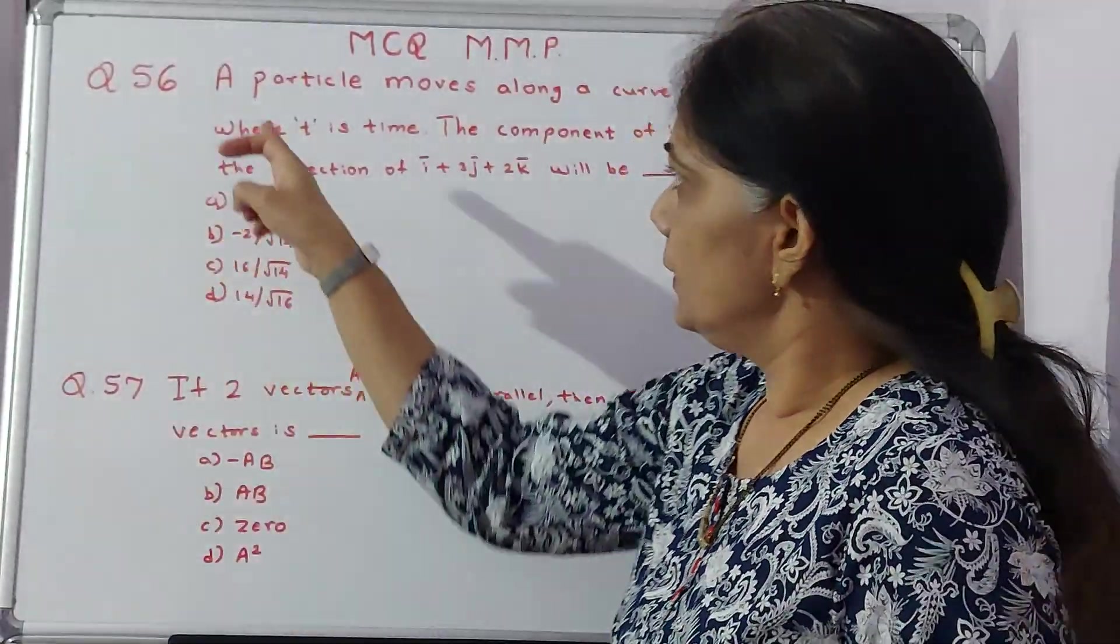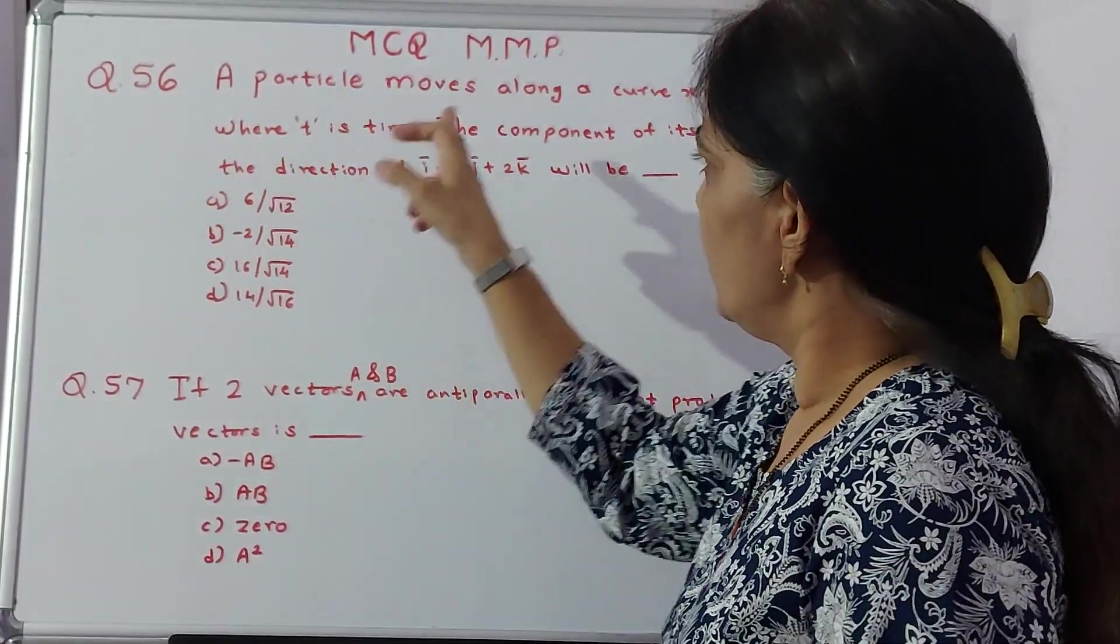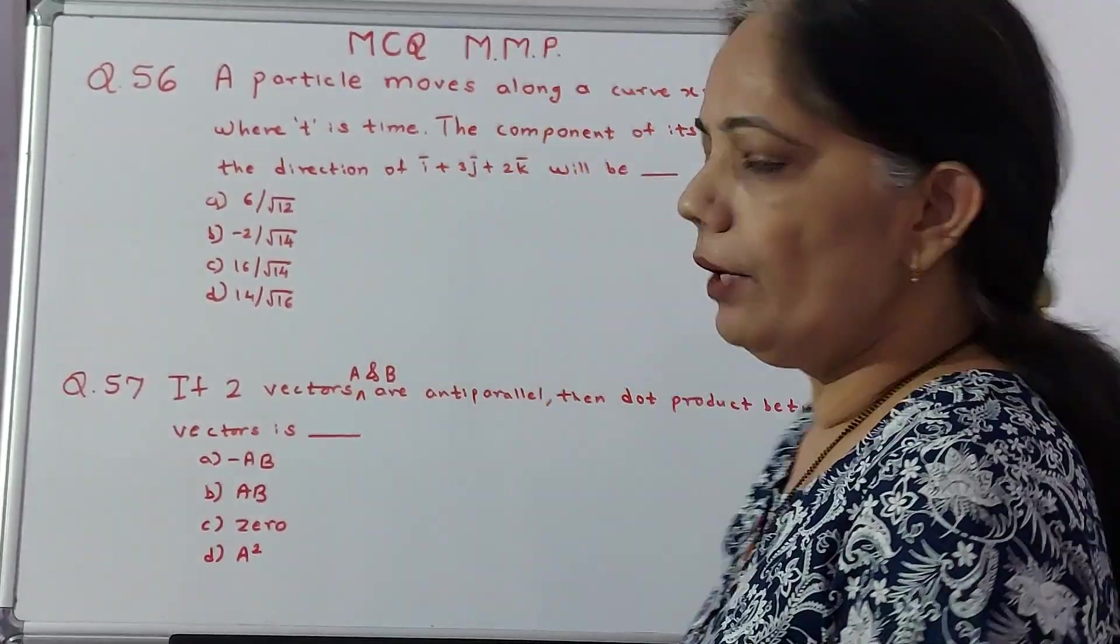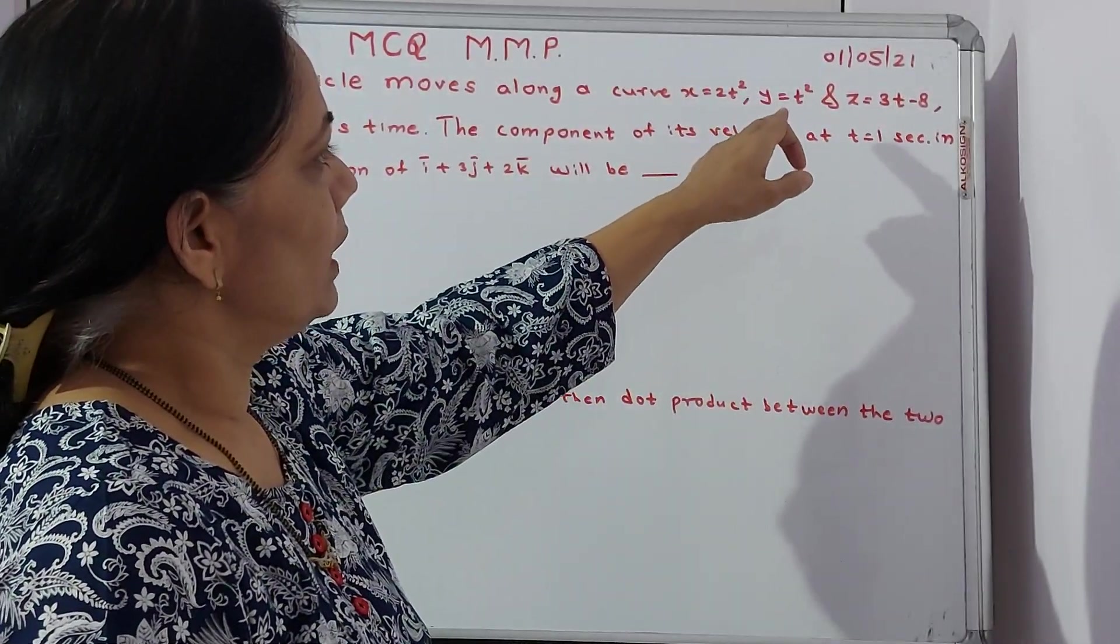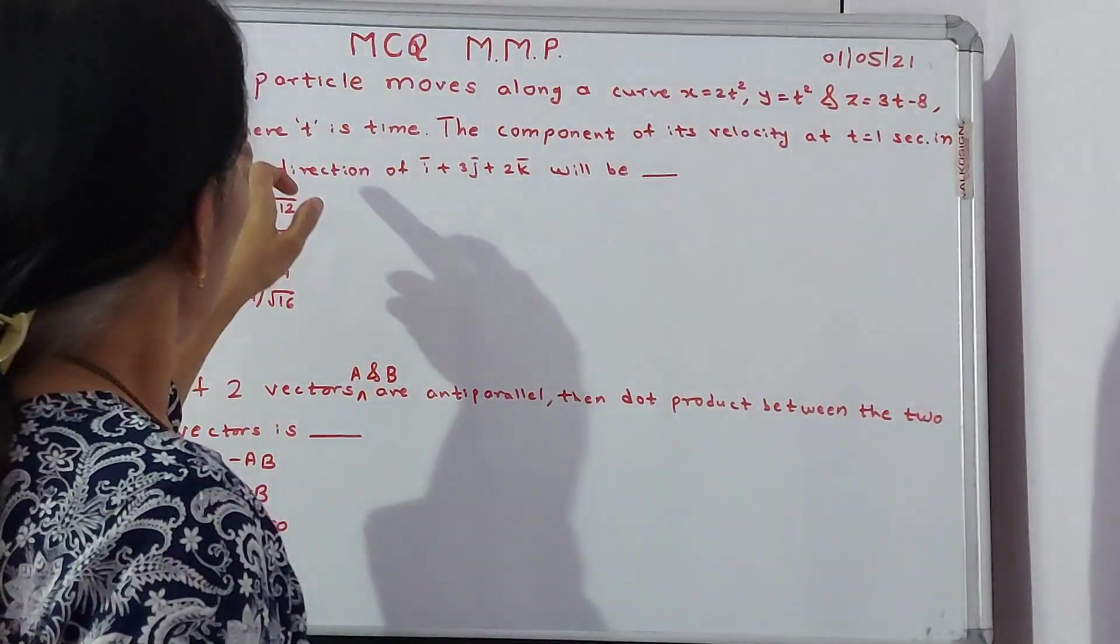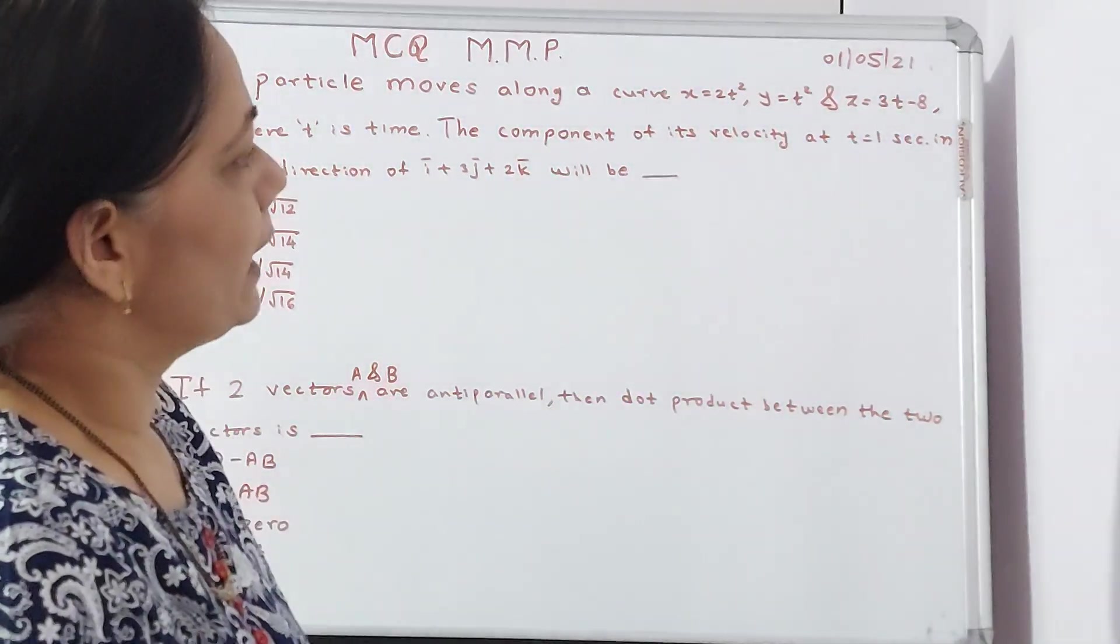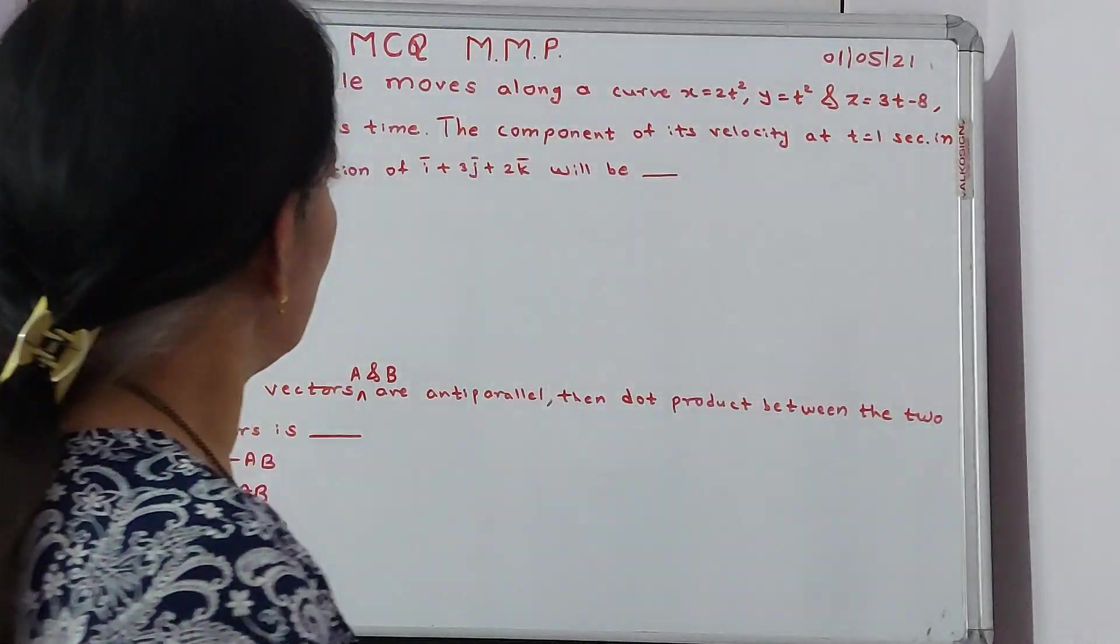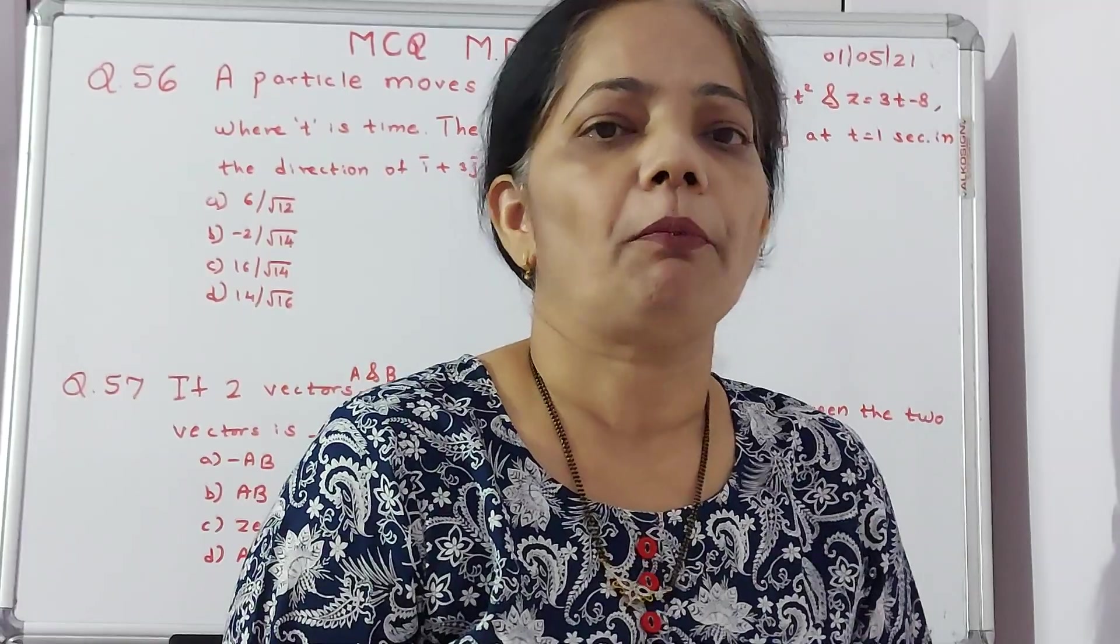We'll move towards the next question, question number 56. A particle moves along a curve, x equals 2t square, y equals t square, and z equals 3t minus 5. Where t is the time. The component of its velocity at t equals 1 second in the direction of i plus 3j plus 2k will be how much?